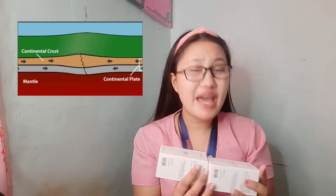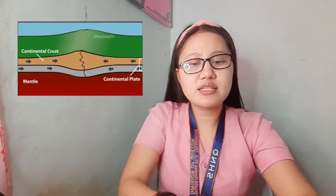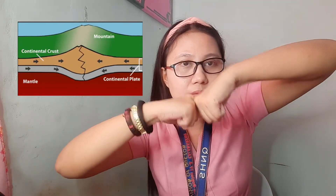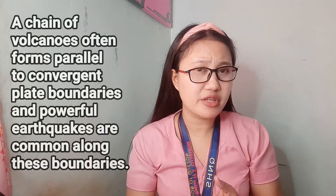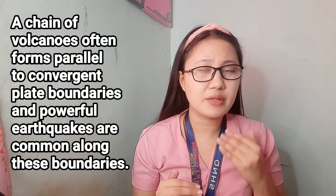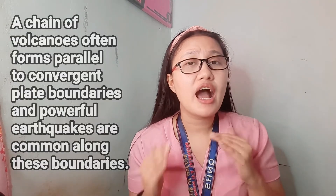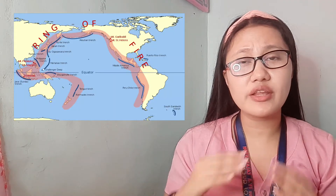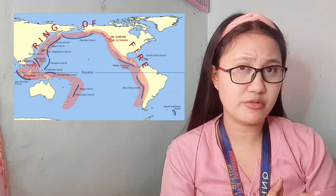Or one of the plates may bend down into the deep sea floor trench. A chain of volcanoes often forms parallel to the convergent plate boundaries, and powerful earthquakes are common along this kind of boundary. The Pacific Ring of Fire is one of the examples of a convergent plate boundary.